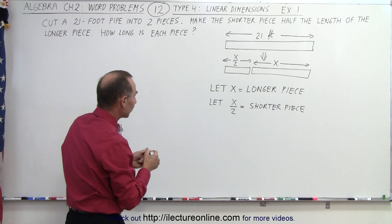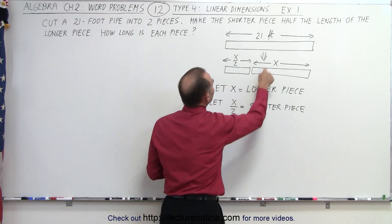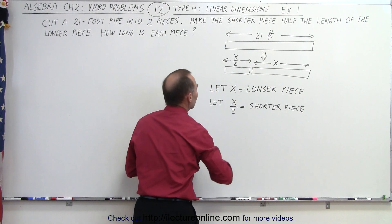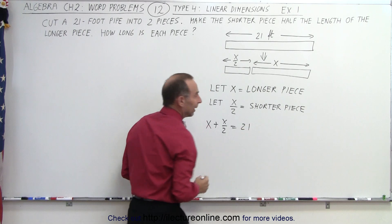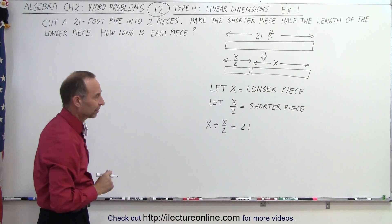Now we know that the sum of the two pieces needs to add up to 21 feet, which means that x plus x over 2 equals 21. Now we need to solve that equation for x.